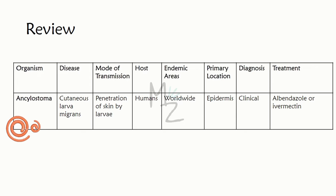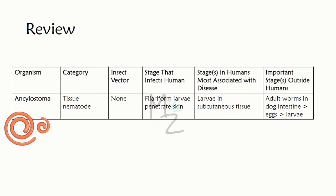Review of Ancylostoma: it causes Cutaneous Larva Migrans (CLM); transmission is via skin penetration by larvae; hosts are humans; endemic worldwide, especially the US; primary location is the epidermis; diagnosis is mainly clinical; treatment is albendazole or ivermectin. It is a tissue nematode with no insect vector; infective stage is filariform larvae penetrating skin; disease-associated stage is larvae in subcutaneous tissue; important outside-host stage is adult worm in dog intestine releasing eggs converted to larvae.